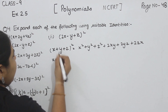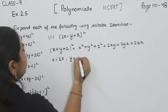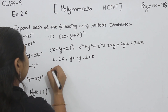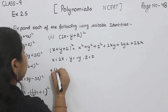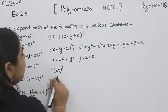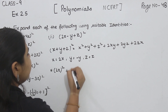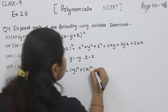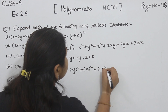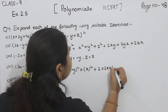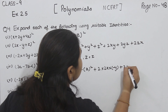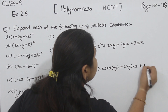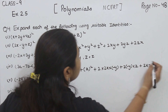Now here X is equal to 2X, Y is equal to minus Y, and Z is equal to Z. We start putting values in the identity: X square plus Y square plus Z square plus 2XY plus 2YZ plus 2ZX.